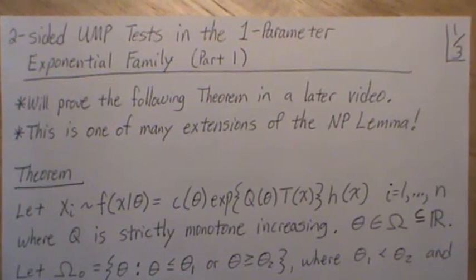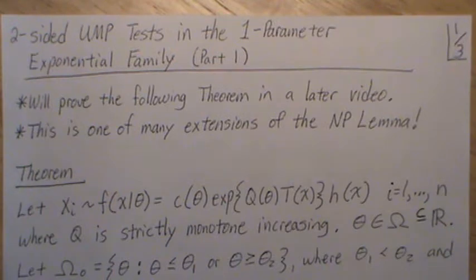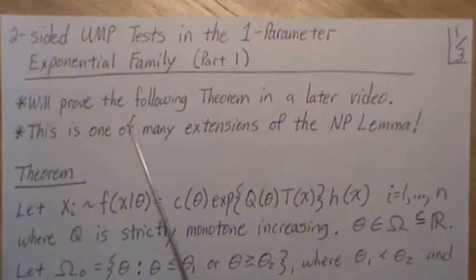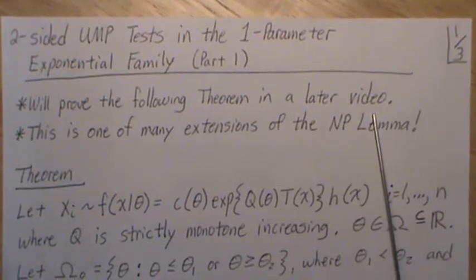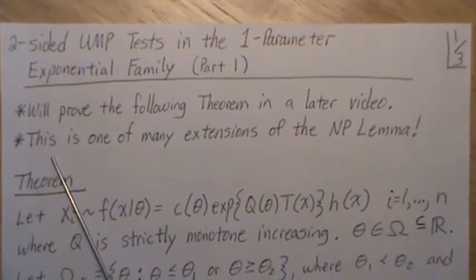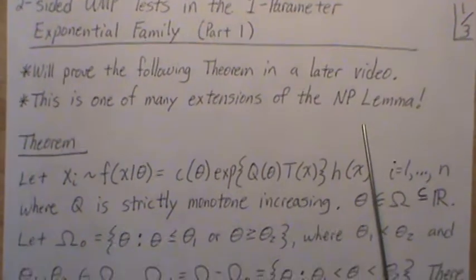This is the next video in a playlist called hypothesis testing, and we're going to look at an extension of the Neyman-Pearson lemma for two-sided uniformly most powerful tests in the one-parameter exponential family. This will be a several-part mini-series. We'll state a theorem here but prove it in a later video, as this is one of many extensions of the Neyman-Pearson lemma.